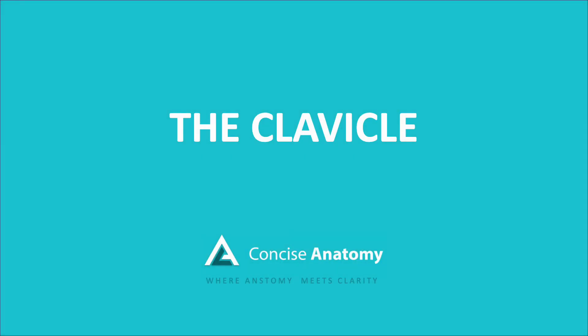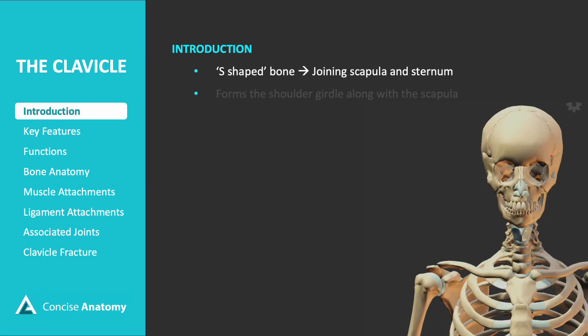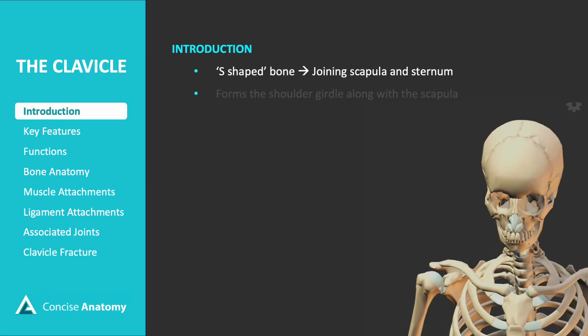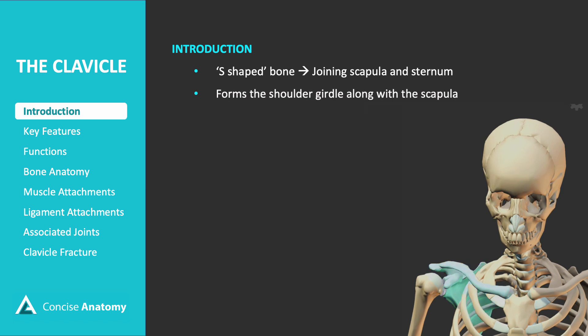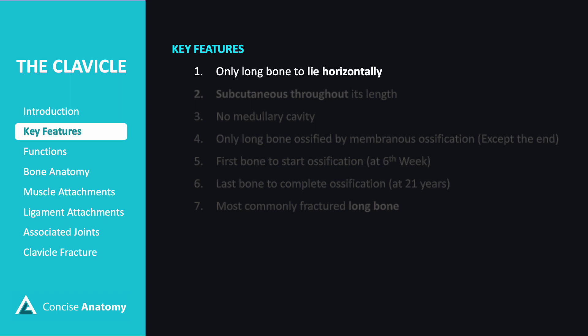In this video, we're going to learn about the anatomy of the clavicle, also known as the collarbone. The clavicle is an S-shaped bone connecting the acromion process of the scapula to the manubrium of the sternum. This connection forms part of the shoulder girdle, which provides support and mobility to the upper limb. Here are some important key anatomical features specific to the clavicle.